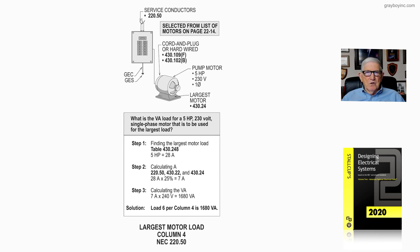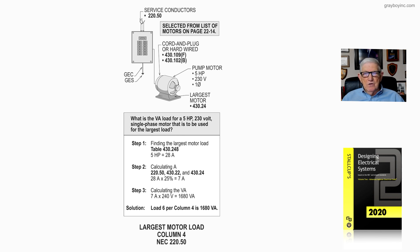You have loads outlined in columns 1 through 4 that we've been calculating. Figure 22-17 is simply illustrating the calculation and selection of the largest motor load in accordance with 220.50, as well as 220.14C.